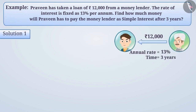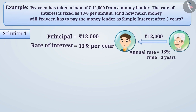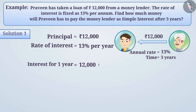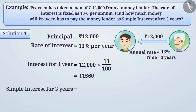Solution 1. Here, Rs 12,000 is borrowed. Therefore, the principal is Rs 12,000. Rate of interest is 13% per year. This means if Praveen takes a loan of Rs 100, then after 1 year he has to give Rs 13 as interest to the money lender. Thus, on the loan amount of Rs 12,000, the interest for 1 year will be Rs 12,000 × 13/100 which is equal to Rs 1,560. Therefore, simple interest for 3 years is 3 × 1,560 which is equal to Rs 4,680.